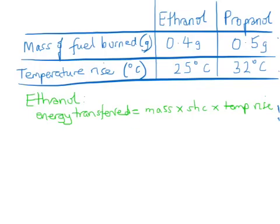This is where many students make a fundamental mistake. When they look at the mass, they think about the mass of the fuel that's burned and not the mass of the water that's been heated. So in the first case for the ethanol, the mass would be 100 grams because that's the amount of the water that was heated. The specific heat capacity would be 4.2 and the temperature rise in this case would be 25 degrees.